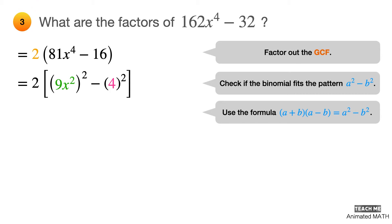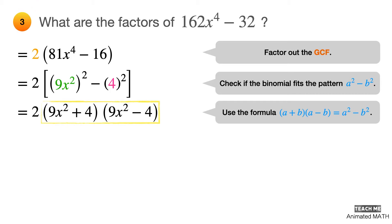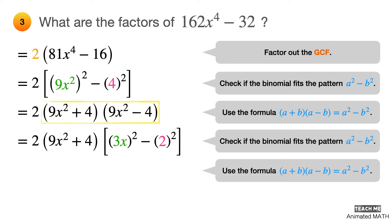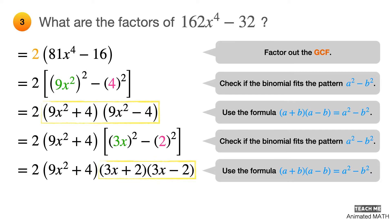Factor the difference of two squares using (a + b)(a − b), where a equals 9x² and b equals 4. But it doesn't end there! 9x² minus 4 also fits the pattern for a squared minus b squared: 9x² is the square of 3x, and 4 is 2 squared. Factor again using (a + b)(a − b) where a equals 3x and b equals 2. Because we can't factor any further, the final answer is 2(9x² + 4)(3x + 2)(3x − 2).